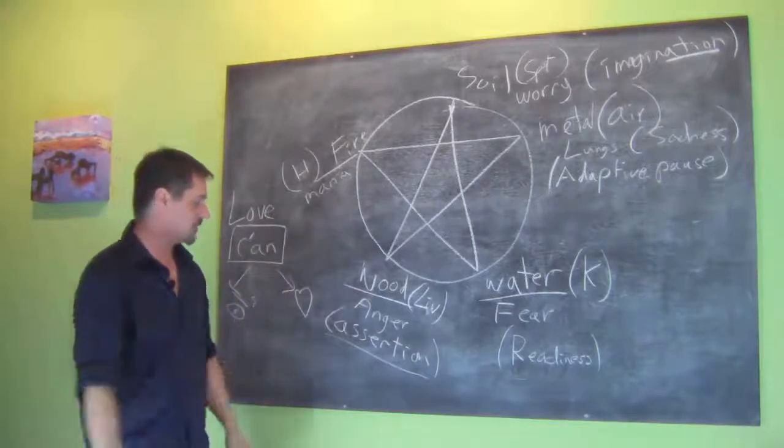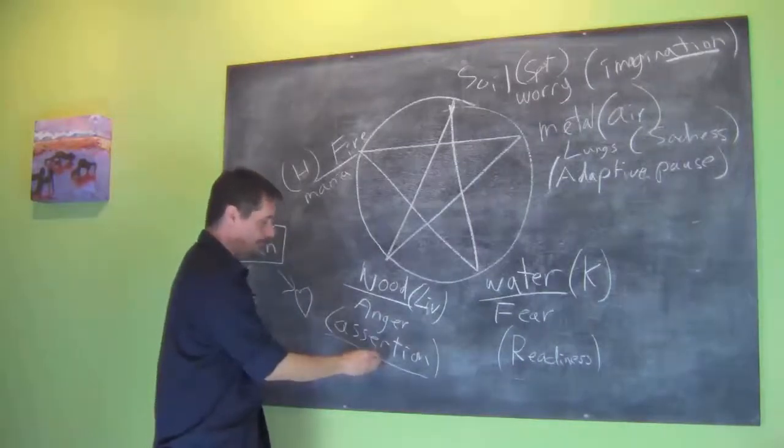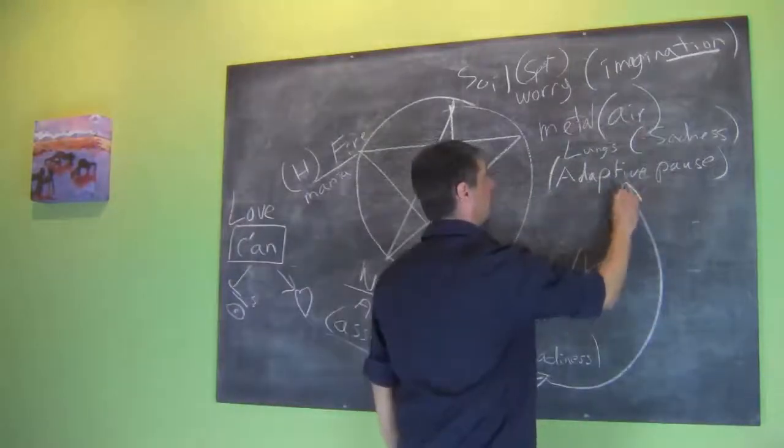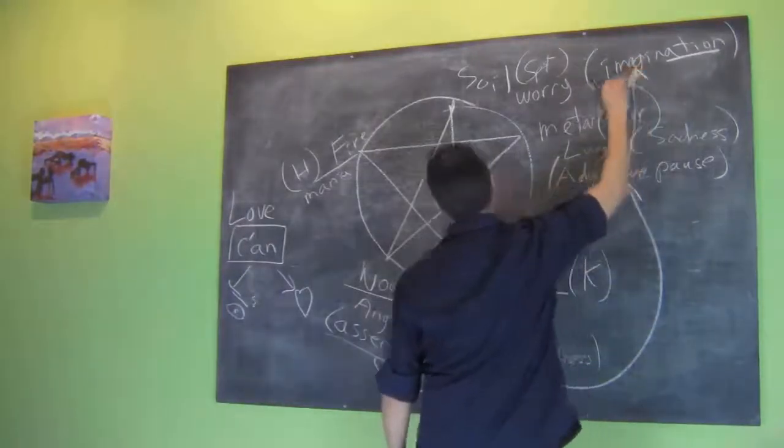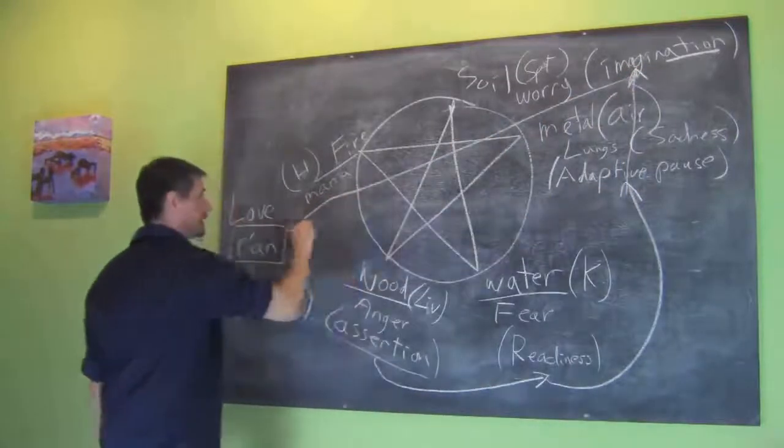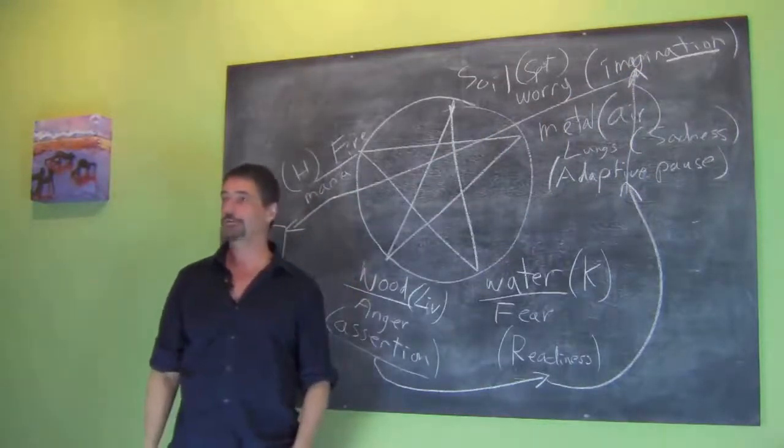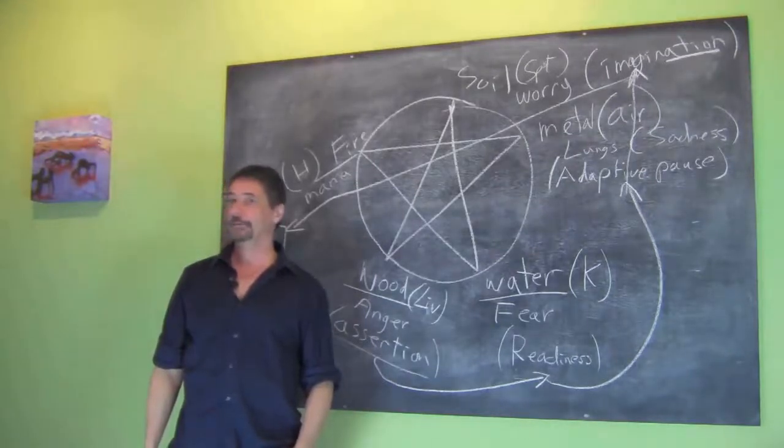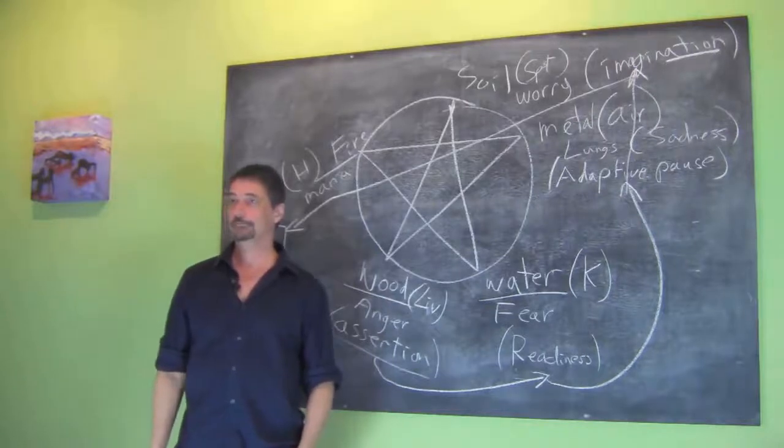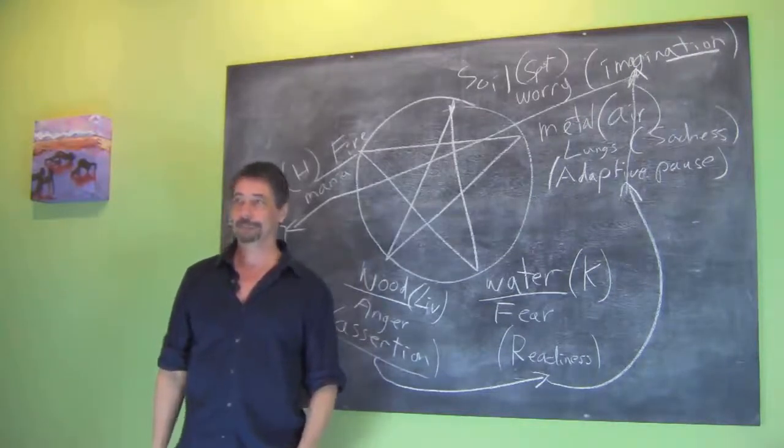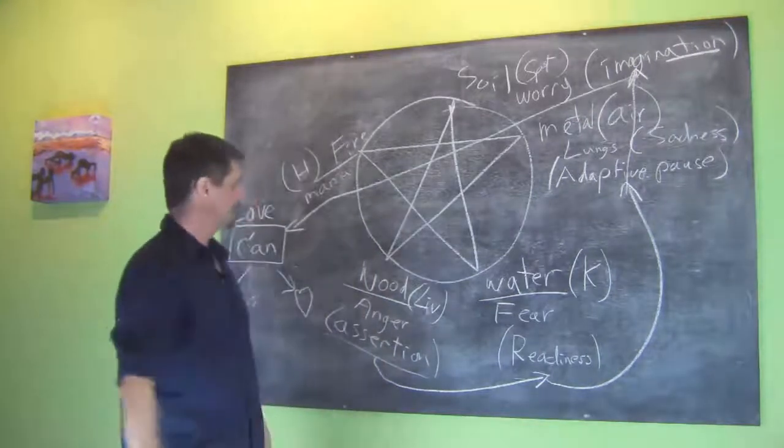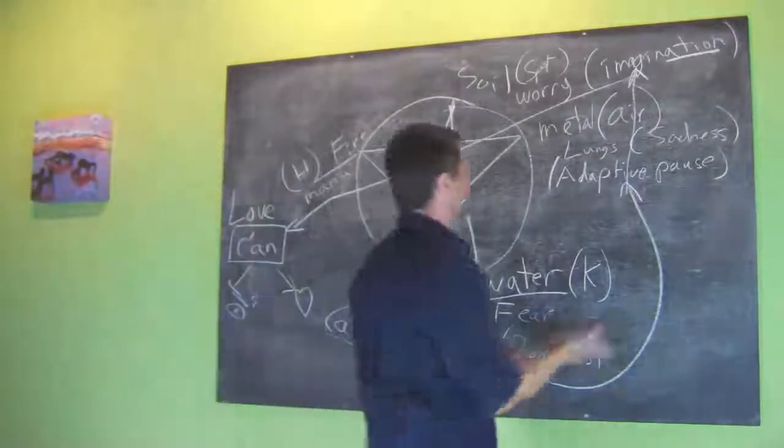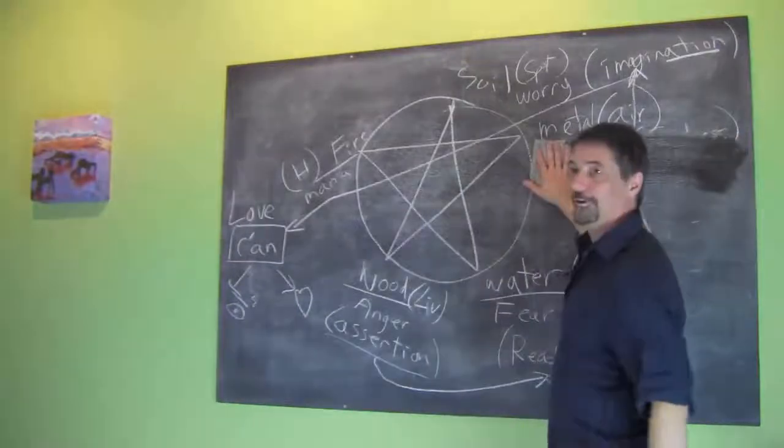But what I would encourage anyone to do is start here. Make your assertion to be ready enough to take your adaptive pause and imagine your way out of that place towards your ability to actually see yourself for who you are and love yourself. Because that's what we do. I love sharing that with people.